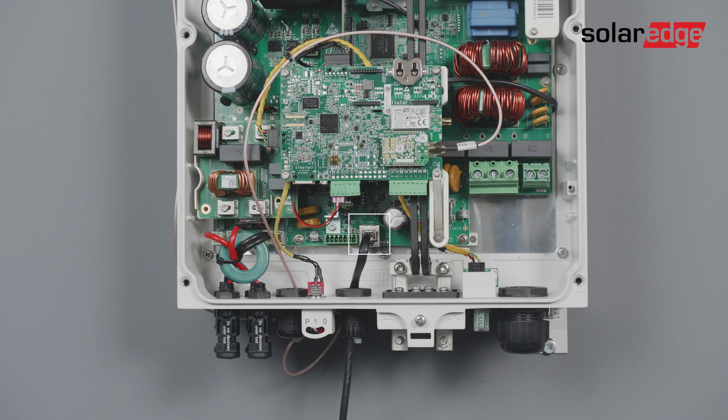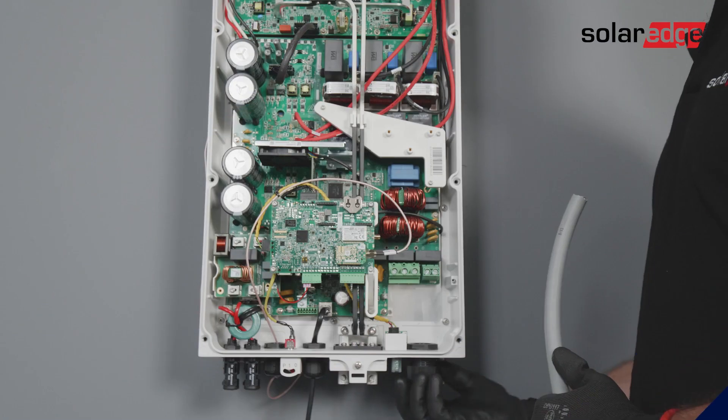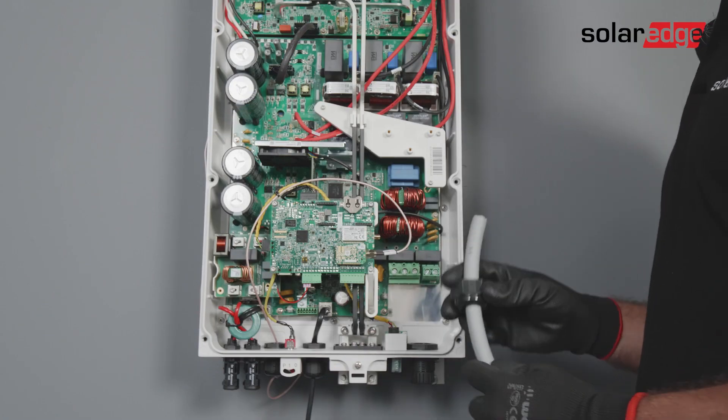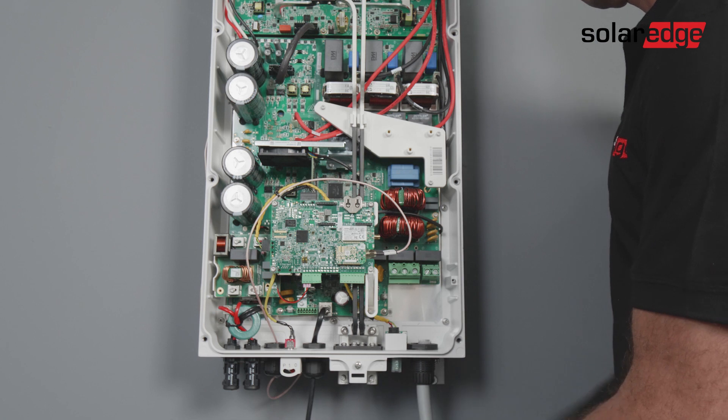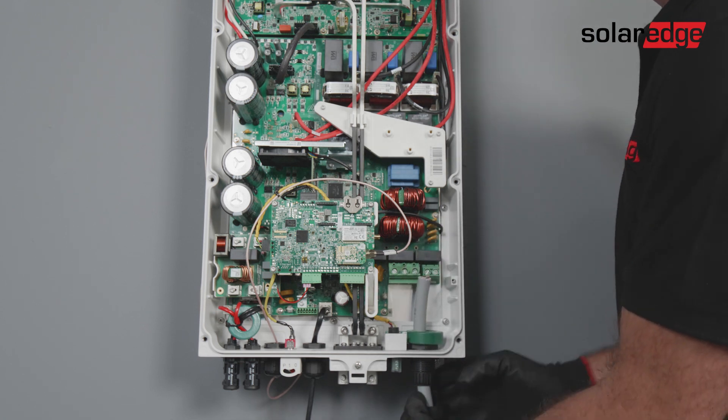Now we move on to learn how to connect the inverter to AC. Use a 5-wire cable. The maximum wire size for the input terminal blocks is 6 square millimeters. Open the AC cable gland. Insert the AC cable through the AC gland. Thread the AC cable through the ferrite bead supplied with the inverter.